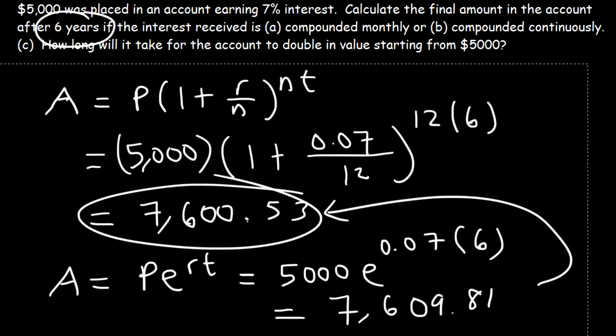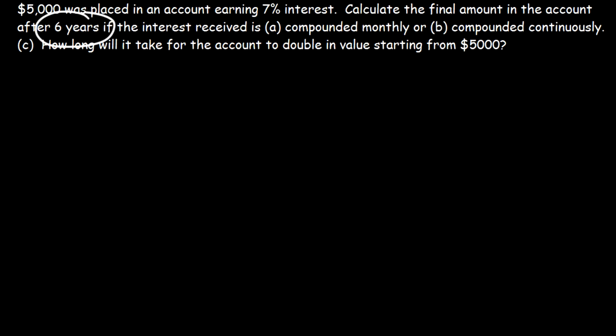Now part C, how long will it take for the account to double in value starting from 5,000? Now the only thing that I didn't mention for part C is if it's compounded monthly or continuously. So let's go with part A. Let's say that it's compounded monthly. If we're looking for how long, we need to find the value of T. So let's rewrite the equation.